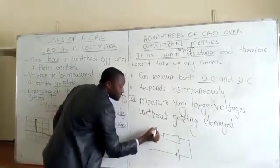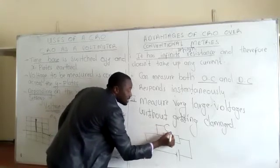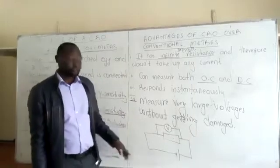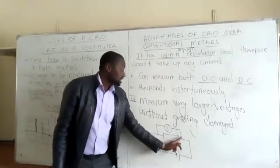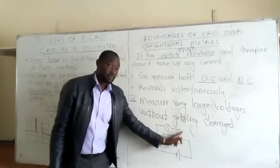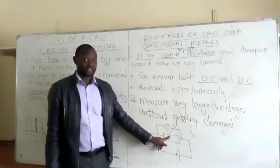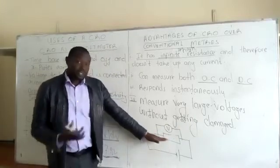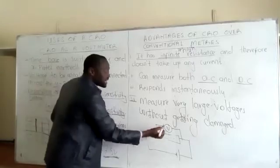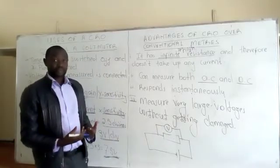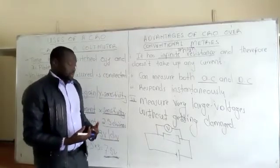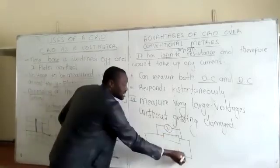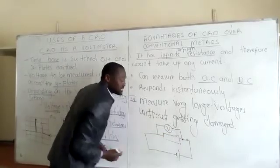...then we connect the voltmeter parallel to that device. Simply because the voltmeter has high resistance. But you notice that however, as the current flows and gets to the junction, current will always take the path with the lower resistance.